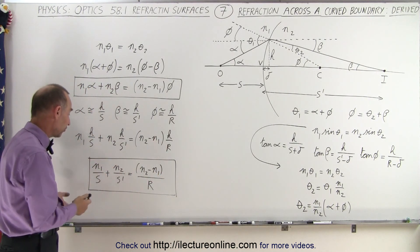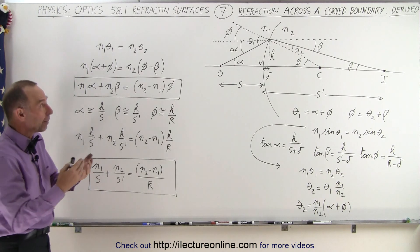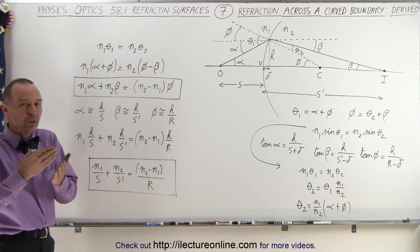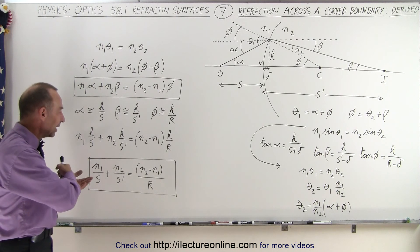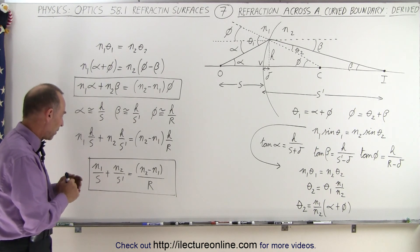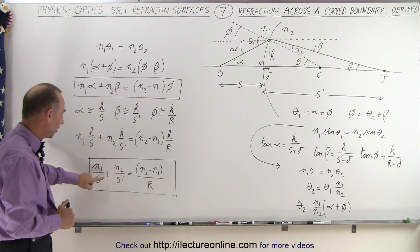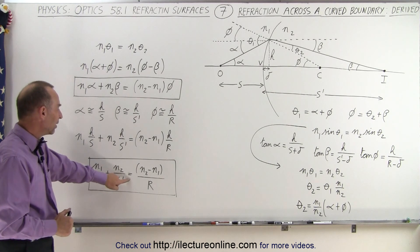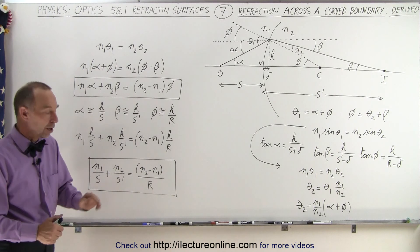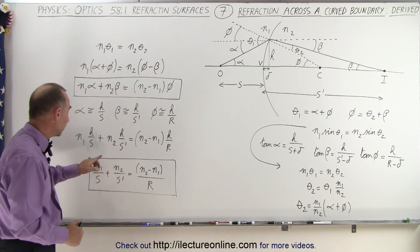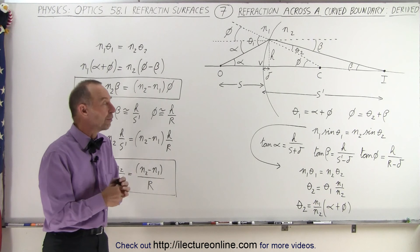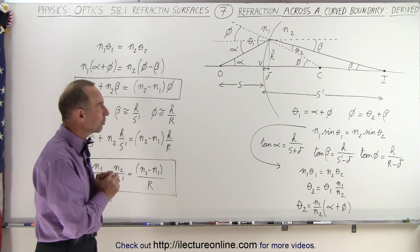This equation should look familiar if you've worked with problems where you have to calculate what happens across a curved boundary during refraction. We've learned that it was n1 over s plus n2 over s prime equals n2 minus n1 divided by r, where r is the radius of curvature, and n1 and n2 are the indices of refraction on both sides of the boundary.